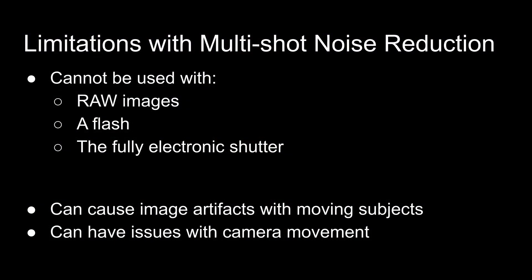Let's talk limitations. Multi-shot noise reduction cannot be enabled if you're shooting in RAW or RAW plus JPEG — it can only be enabled if you're shooting in JPEG or high efficiency image files via the HDR PQ setting. Second, it cannot be enabled if you have long exposure noise reduction enabled, so these two options are not compatible. Low, standard, and high, on the other hand, can be enabled alongside long exposure noise reduction.